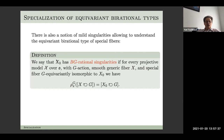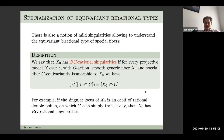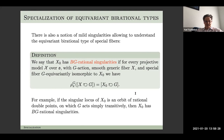We say the special fiber has BG-rational singularities if for every projective model over the integers with G-action, smooth generic fiber X, and special fiber equivariantly isomorphic to X_0, the class of G-action on X_0 is the same as what you get from X. A basic example: you can allow rational double points — an orbit of rational double points on which G acts simply transitively is good enough, and then X_0 has BG-rational singularities. It would be interesting to explore what class of singularities is relevant here.